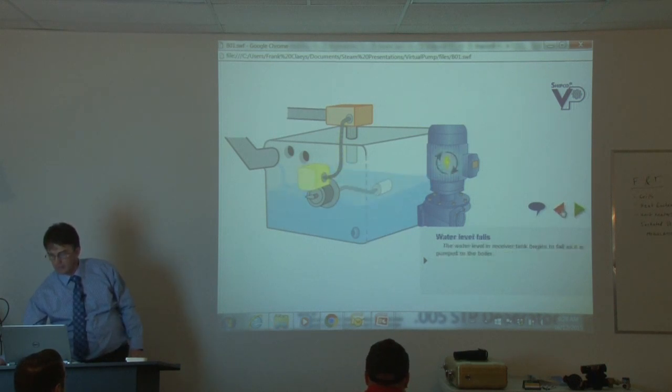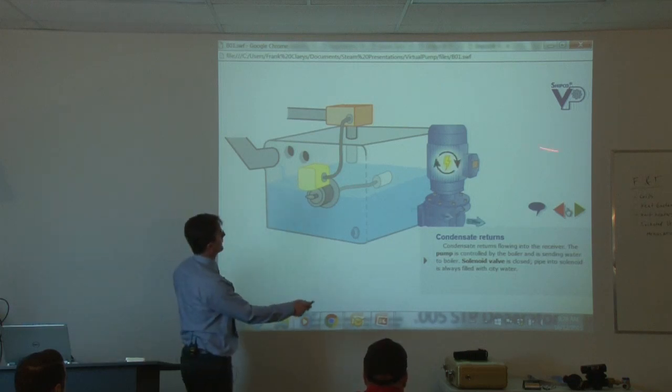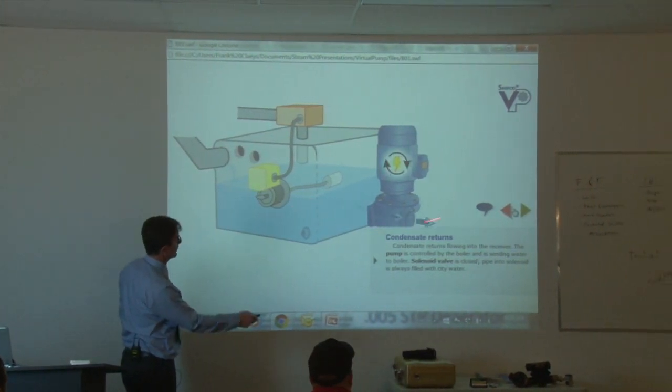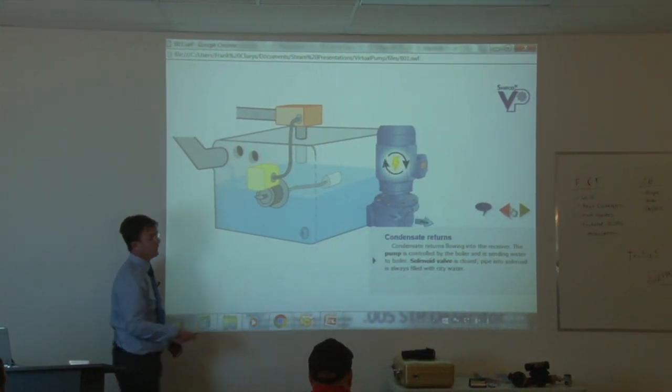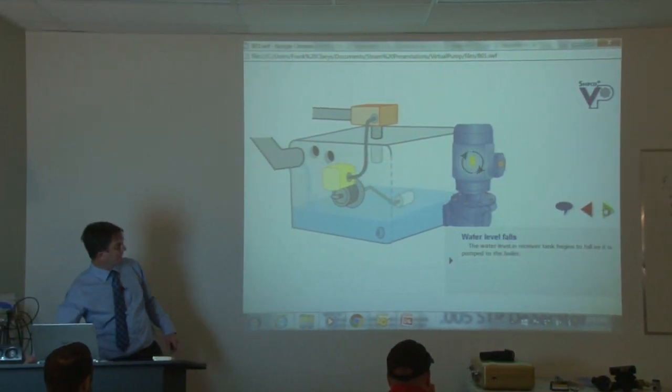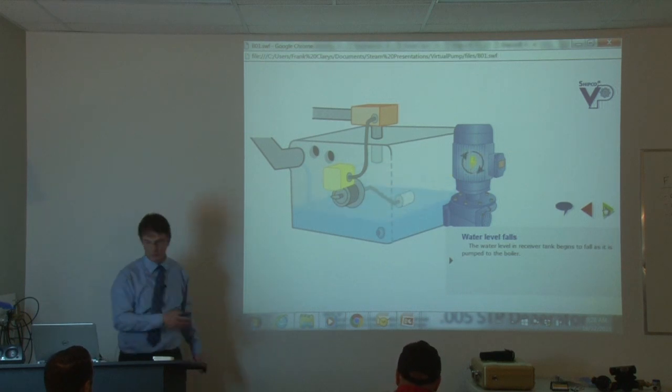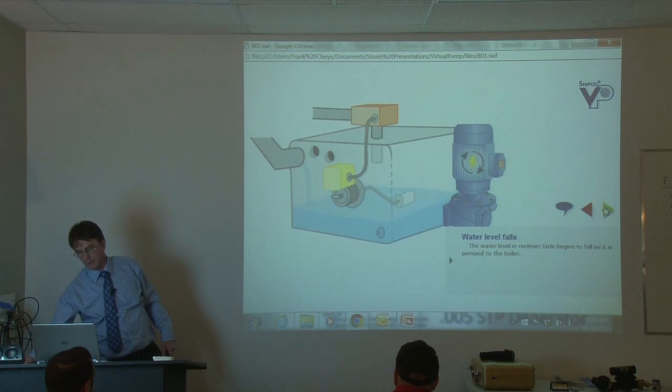So the level goes down. Oh, I got to go back one step. So the boiler is telling the pump to give me some water. So the water from the tank goes to the boiler. The boiler boils it off, but sometimes it will boil off more than the tank can handle because you never have 100% condensate return.